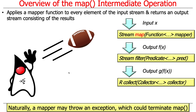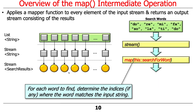If the mapper function throws an exception, that could terminate the stream, which is sometimes necessary, but we don't always need to do that. Usually, 99.9 times out of 100, the map operation will run to completion. That's why it's called a run-to-completion operation.